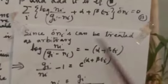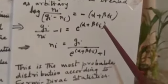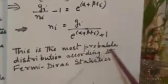Since delta NI can be treated as arbitrary, log NI divided by GI minus NI equals minus alpha plus beta epsilon I. Simplifying this, GI by NI minus 1, removing log, exponential comes here, exponential to the power of alpha plus beta epsilon I. From here we get NI equals GI divided by exponential alpha plus beta epsilon I plus 1. This equation is very important. This is the most probable distribution according to Fermi-Dirac statistics.